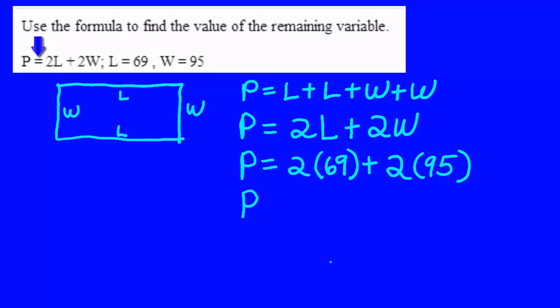So I'll have P equals 2 times 69 which is 138 plus 2 times 95 which is 190. And then when I add those two together I get the length of the fence. So I can go to Lowe's and say give me this much fencing, 328 feet or yards, units for sure.